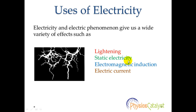Static electricity is an imbalance of electric charge within or on the surface of a material. It often happens when you rub things together. For example, if you rub a balloon against a jumper a few times, it sticks to you. Lightning, as defined earlier, is also caused by static electricity.